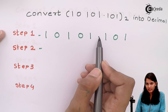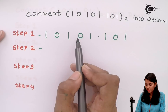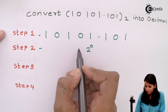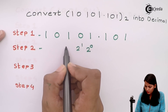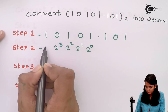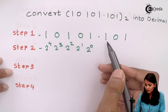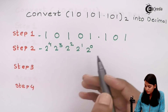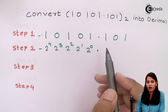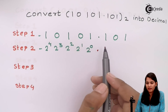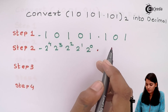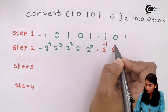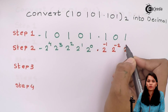To write down the weightage after the decimal point, we take positive index values of 2 going left: 2 raise to 0, 2 raise to 1, 2 raise to 2, 2 raise to 3, and 2 raise to 4. After the decimal point, the index values of 2 become negative: 2 raise to minus 1, 2 raise to minus 2, and 2 raise to minus 3.